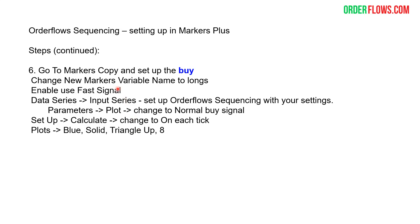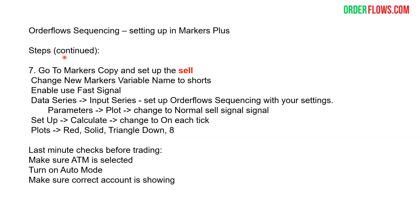Now let's set up the individual Markers Copy. First, the buy: go in and change the markers variable name to longs. Enable fast signal, go to data series, and add the order flow sequencing with the settings that you use. You have to set them for both the buys and the sells. Change the parameters plot to the normal buy signal. Then change the setup calculation from on bar close to on each tick. For the plots I like to keep it the same as the actual indicator — blue triangle up, size eight.